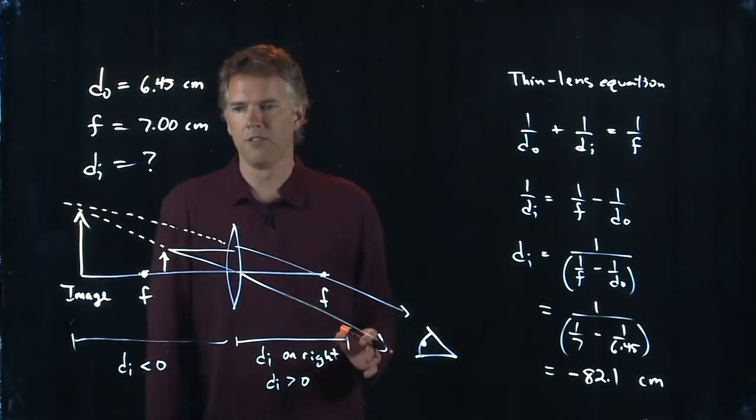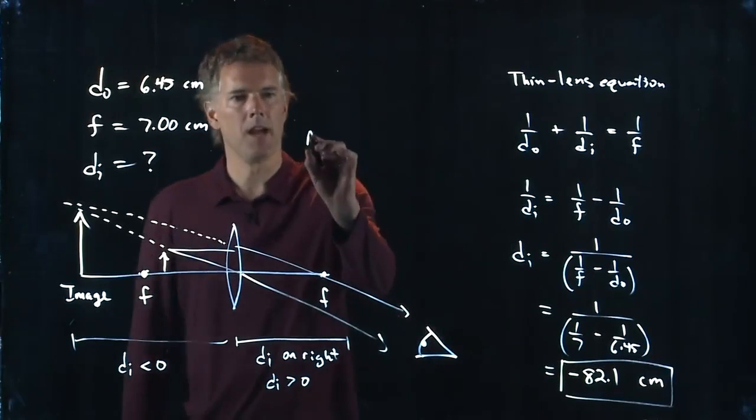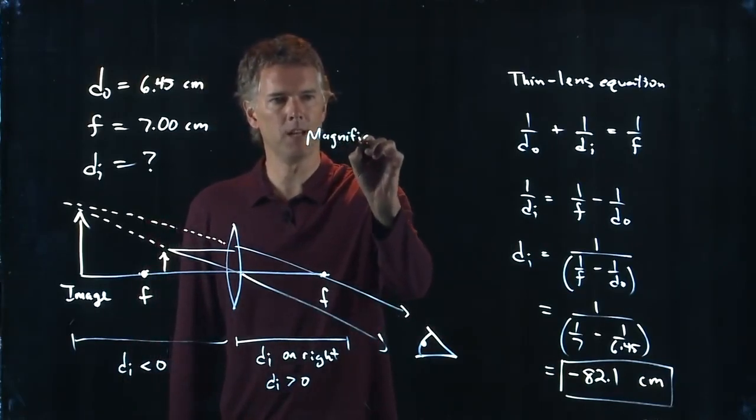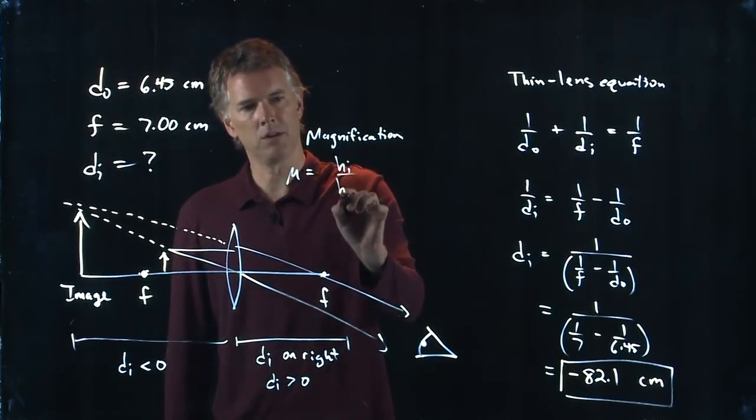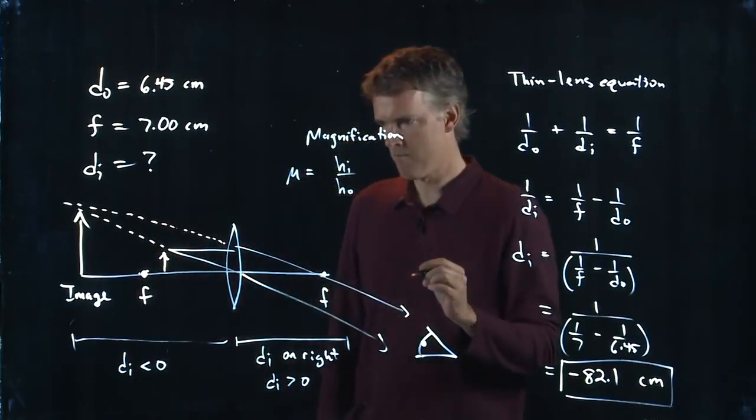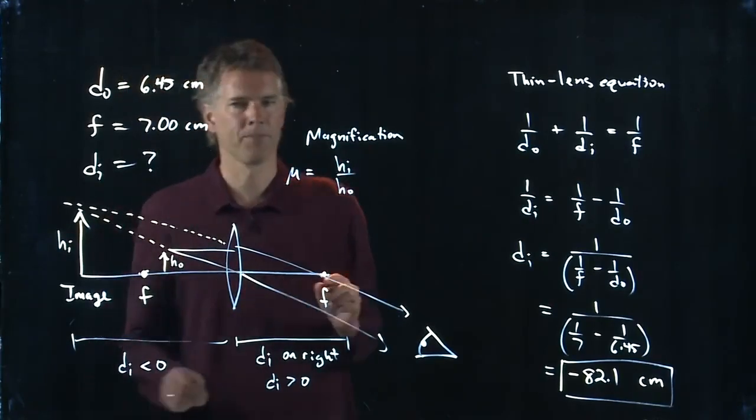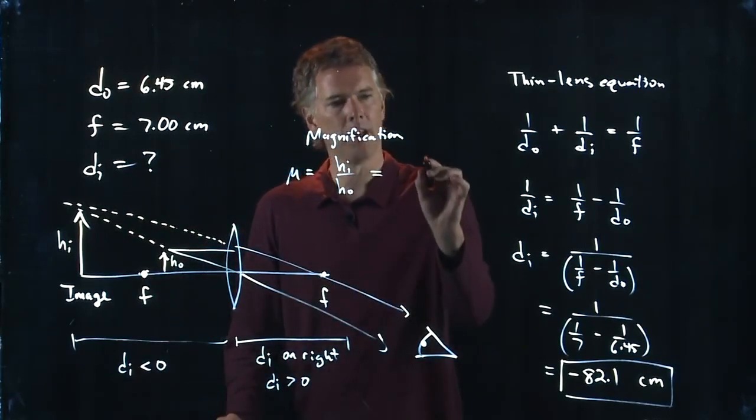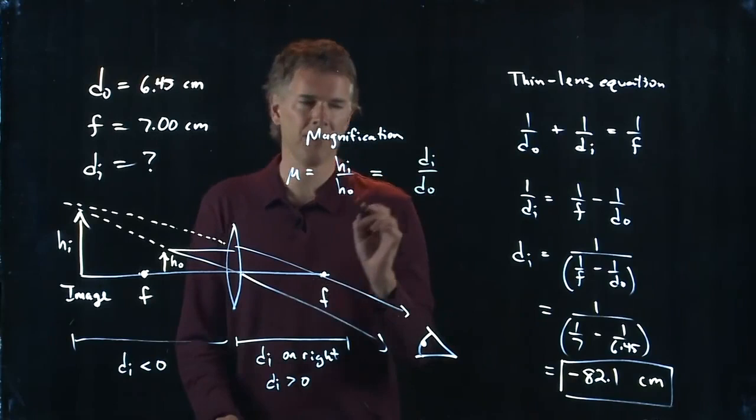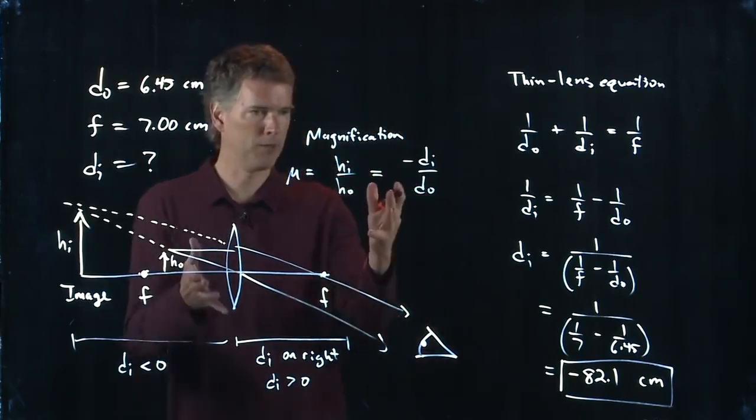Second part says calculate the angular magnification. And remember what magnification is. M is equal to the height of the image divided by the height of the object. This is the height of the object. This is the height of the image. And you can do a little trig here to show that this is the same as the image distance over the object distance, except there's a negative sign right there. Okay. And now we have all those numbers.